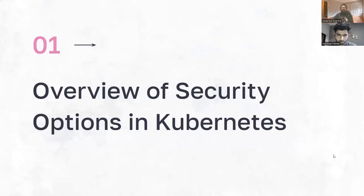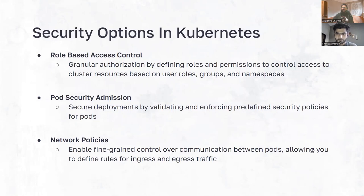Kubernetes has become the operating system of the cloud, and with the complexities that our applications and infrastructure have, it's very important to have a robust security measure in place. RBAC basically helps us control who can access and perform actions within your Kubernetes clusters. You can think of them as bouncers at an exclusive club — it allows you to define fine-grained permissions for user groups and accounts. This is one of the very popular ways for securing access to your clusters.